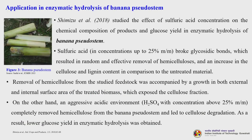Application of dilute acid pretreatment in enzymatic hydrolysis of banana pseudostem: Shimizu et al. studied the effect of sulfuric acid concentration on chemical composition and glucose yield. Sulfuric acid up to 25% broke glycosidic bonds, resulting in effective removal of hemicellulose and increase in cellulose and lignin content compared to untreated material. Removal of hemicellulose increased both external and internal surface area, exposing the cellulose fraction. However, above 25% sulfuric acid, hemicellulose was completely removed and cellulose degradation occurred, resulting in lower glucose yield.